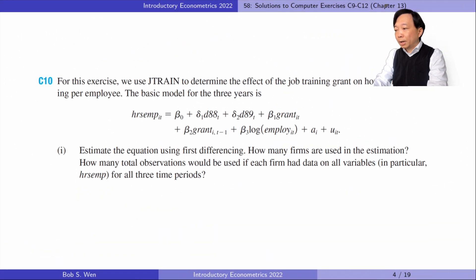Let's do computer exercise 10. We use data to determine the effect of job training grant on hours of job training per employee. The basic model for the three years is as follows. In part 1, we estimate the equation using first differencing. The equation is as follows.